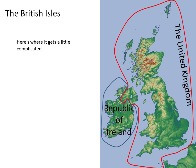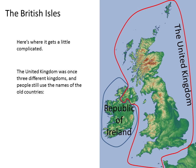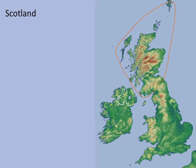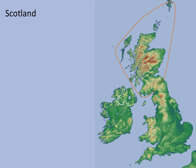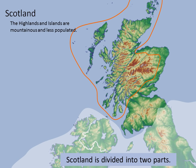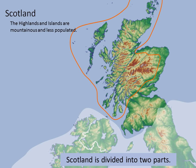Here's where it gets a little complicated. The United Kingdom was once three different kingdoms, and people still use the names of the old countries. We have Scotland, we have England, and we have Wales. Scotland is divided into two parts: the highlands and the islands — some people divide them into three, adding the central plains. The highlands and islands are mountainous and less populated.